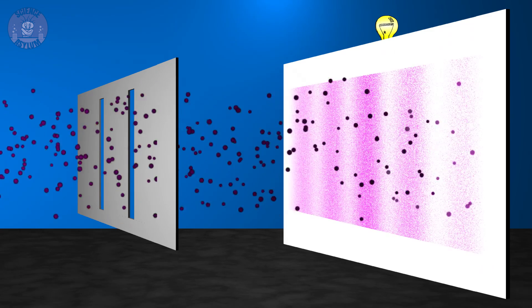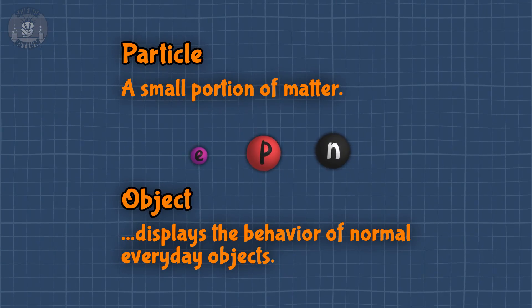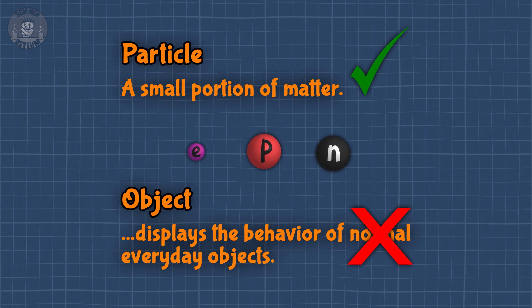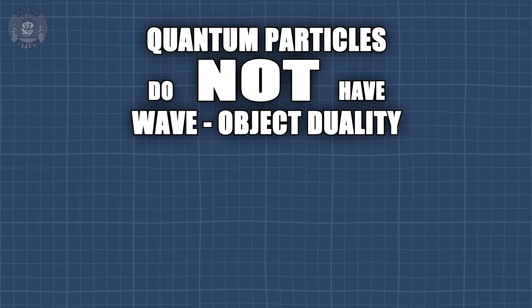It gets weird when we do this experiment with microscopic things like electrons. If we only detect the electrons at the second wall, we see wave behavior. If we detect the electrons at both walls, we see object behavior. It would appear that what quantum particles are depends on the circumstances, but that's not actually the case. Electrons, protons, and neutrons are always particles, but are never truly objects. The double slit experiment doesn't tell us that particles behave two different ways — it tells us that our ordinary notions of behavior are wrong. Quantum particles do not have wave-object duality. They are never objects. They are always waves. Quantum particles only behave one way: their way.